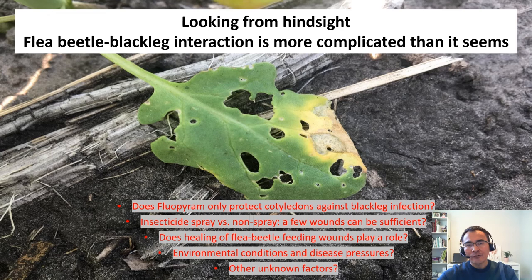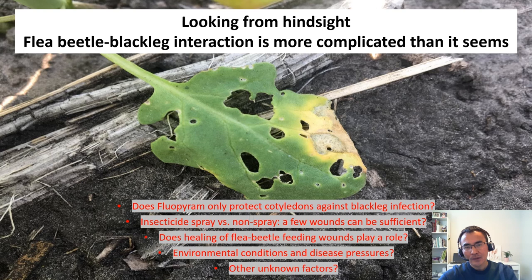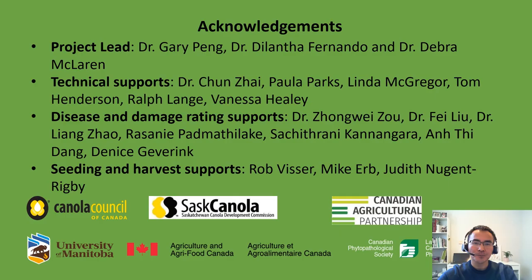So what is happening? We realize that flea beetle and black leg interaction is probably more complicated than it seems. Given the low efficacy of Fluorprime seed treatment and early insecticide spray in black leg control, many questions remain to be unraveled. For example: Does Fluorprime only protect cotyledons against black leg infections? With insecticide spray versus non-spray, are a few wounds sufficient? Does healing of flea beetle feeding wounds play a role? What about environmental conditions, disease pressures, and other unknown factors? We need further investigation in order to answer these questions.